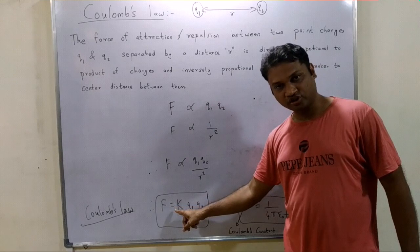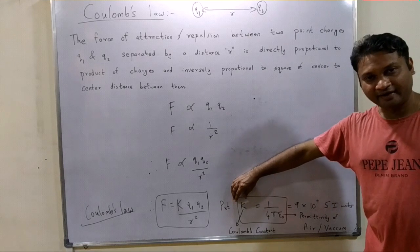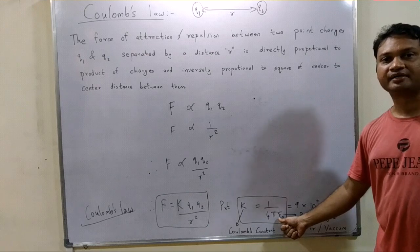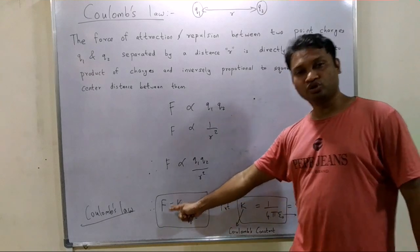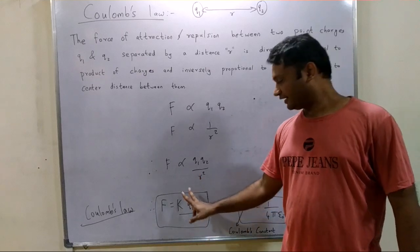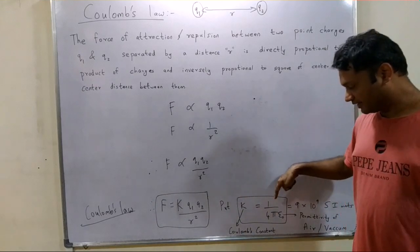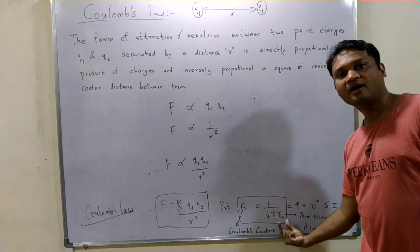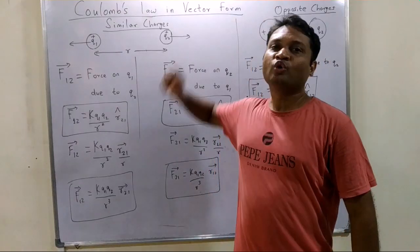Combining these relationships and removing the proportionality sign, force F = k·q1·q2 / r², where k is Coulomb's constant with a value of 9 × 10⁹ SI units. Coulomb's constant can also be expressed as 1 / (4πε₀), where ε₀ is a constant known as the permittivity of air or vacuum.